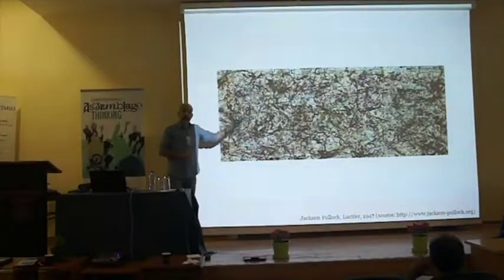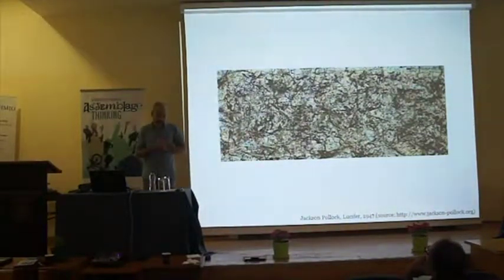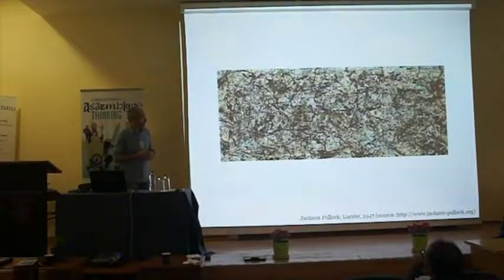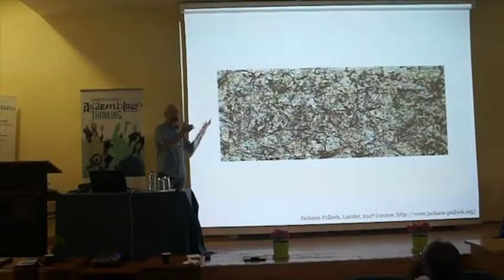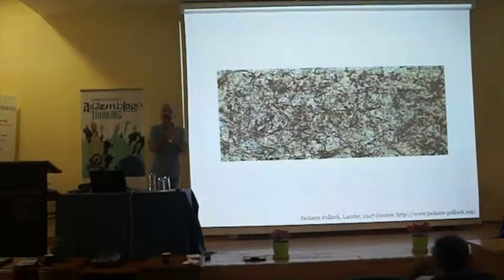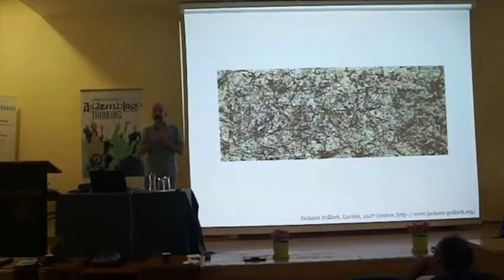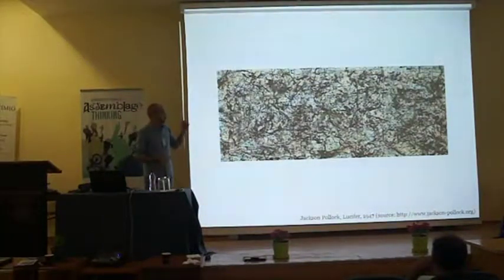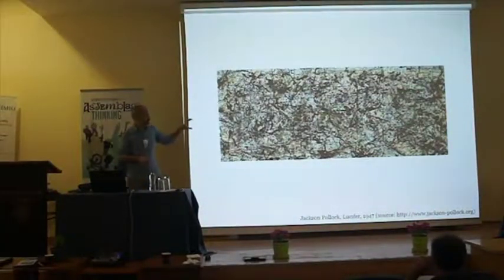Then we have the extreme opposite, which we can find in abstract expressionism — art informel — like the work of Pollock, where Deleuze says the painter is not filtering anymore. He takes what he finds, the information, and just rearranges it and puts everything on the paper. So on one side the digital process, where everything is abstracted and reduced to binary opposition, and then this process — which Deleuze doesn't name; I will call it informational — where we have no abstraction at all and everything is there on the painting.